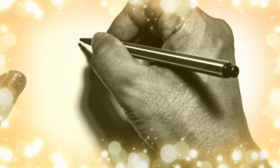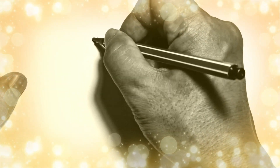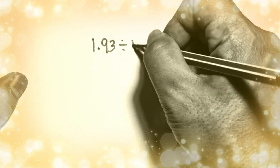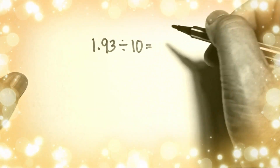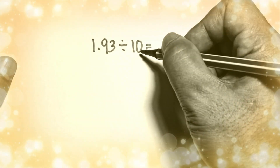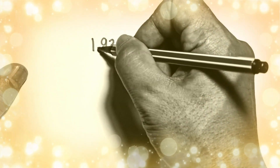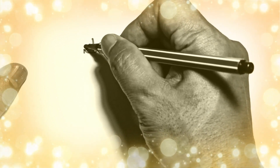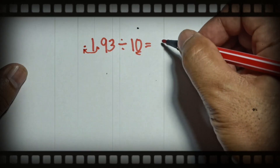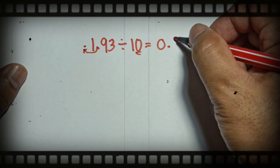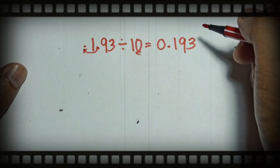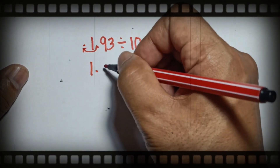Let's take another example. Let's say you have 1.93 divided by 10. What is the rule? In 10 you have one zero, so you have to move your point going to the left one time. Your point will be here, so your answer will become 0.193.